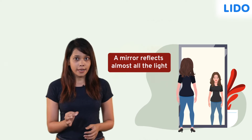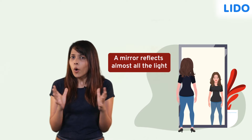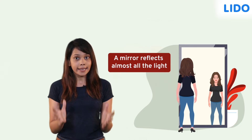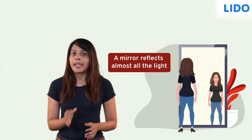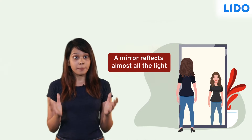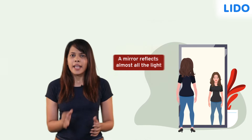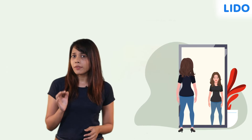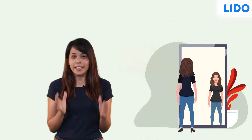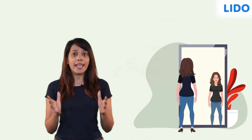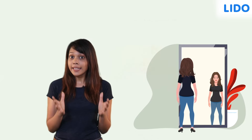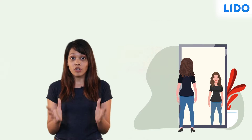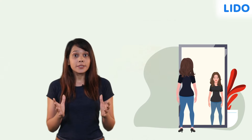A mirror reflects almost all the light that hits it. In the case of a plane mirror, the light will be reflected back depending on the angle that the incident ray strikes the mirror.